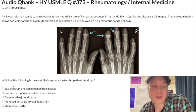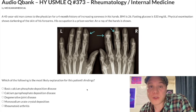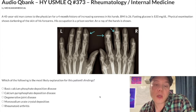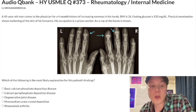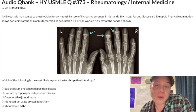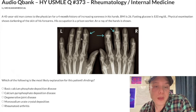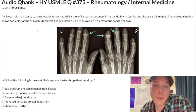Pseudogout — calcium pyrophosphate deposition disease — is the correct answer. It will present one of two ways on USMLE: either a monoarthritis of a large joint such as the knee, or as an osteoarthritis-like picture in a patient with hemochromatosis or primary hyperparathyroidism. Hemochromatosis and primary hyperparathyroidism are two of the biggest risk factors for pseudogout. So when you have DIP involvement and an OA-like presentation in a patient with hemochromatosis or primary hyperparathyroidism, the answer is pseudogout — not degenerative joint disease, not OA.